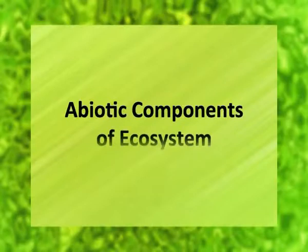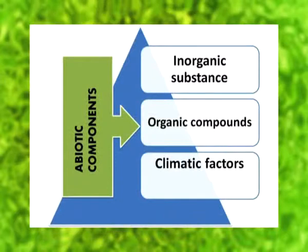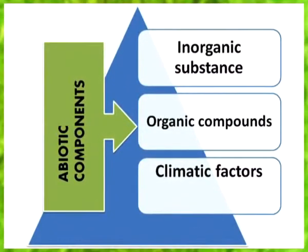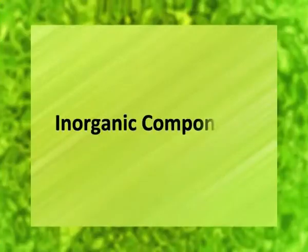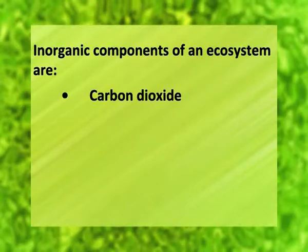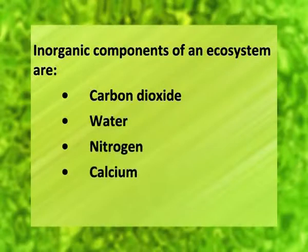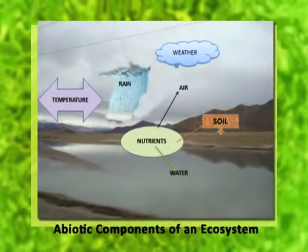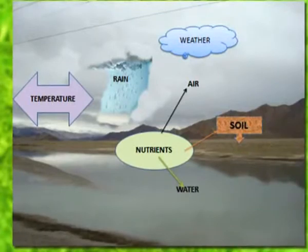Decomposers cause the continual recirculation of chemicals within an ecosystem — that is called nutrient cycling. Now, we will talk about abiotic components of ecosystem. The abiotic components of ecosystem consist of inorganic substances, organic compounds, and climatic factors. The inorganic components of an ecosystem are carbon dioxide, water, nitrogen, calcium, and phosphate. All of these are involved in mineral cycling, that is, biogeochemical cycles.